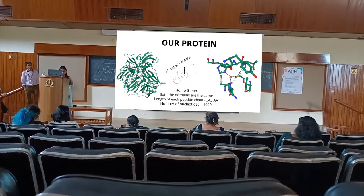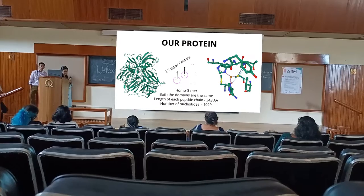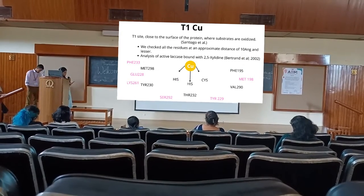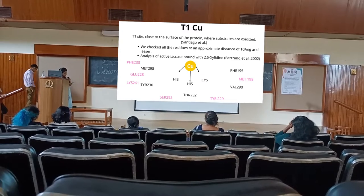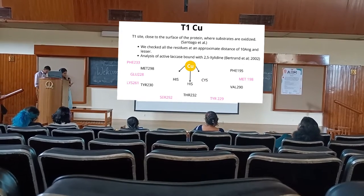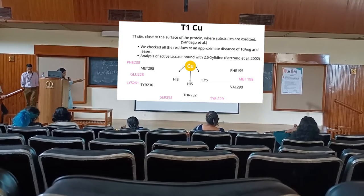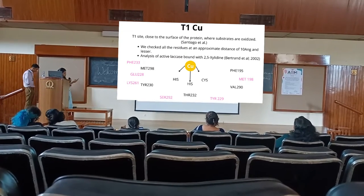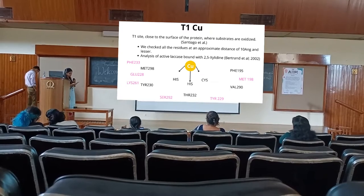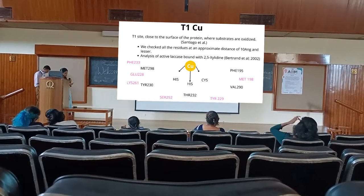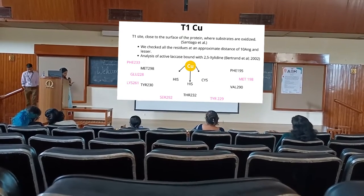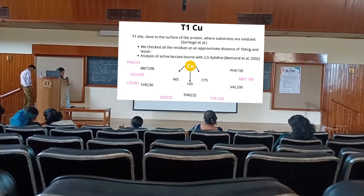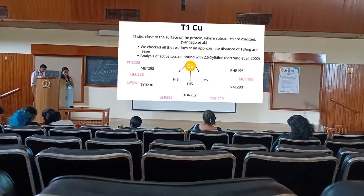During the reaction, the T1 copper site passes electrons to the other copper sites. We identified some amino acids surrounding the T1 copper site — these amino acids are within about 10 angstroms, which is the main catalytic region. The three amino acids histidine, histidine, histidine, and cysteine are conserved throughout the laccase family. There are also several other amino acids of interest whose importance will be discussed later.